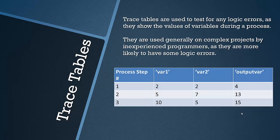An example of a trace table: you'd have the step number on the side, which may represent a line, a section, or a function, and variables in the columns — you could have one variable or you could have ten. Obviously the more variables, the more work you have. The values given at each step are then filled in as you trace through the code.